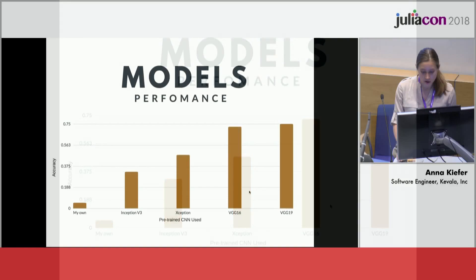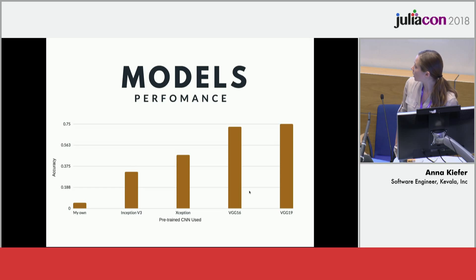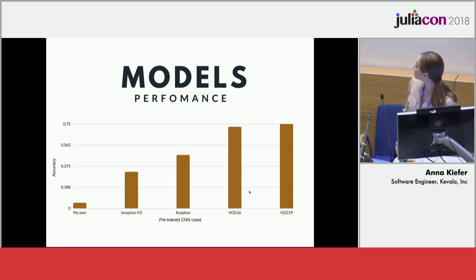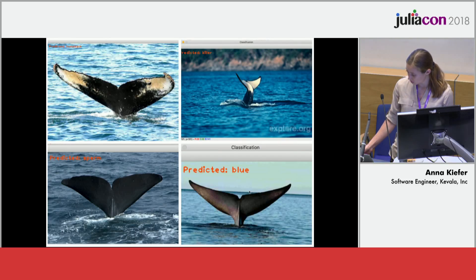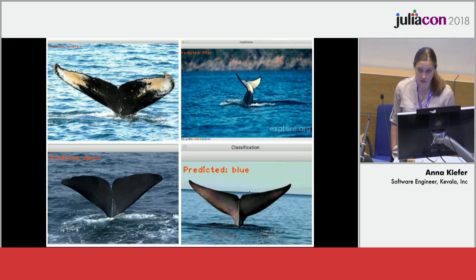These are some other pre-trained models that I tested. VGG19, which is the second iteration of VGGnet, performed slightly better but had a longer runtime — it's more computationally expensive. And here are some actual predictions of my whale images. You can see none of them says surfboard.